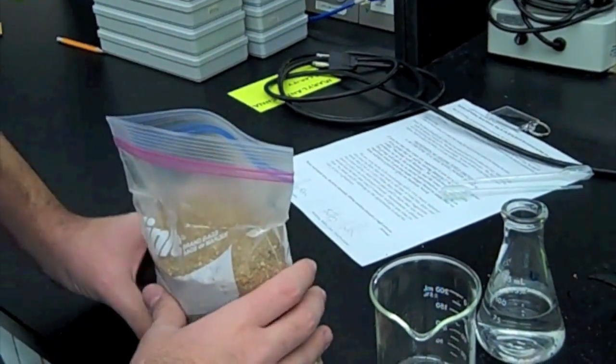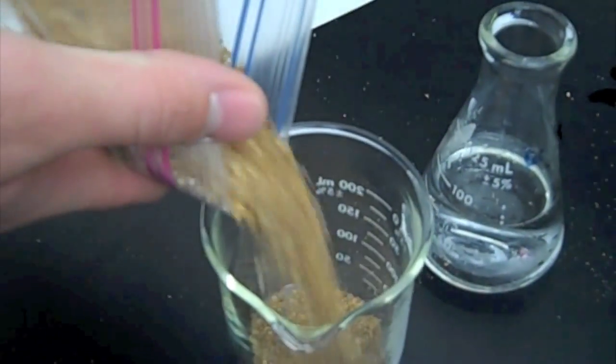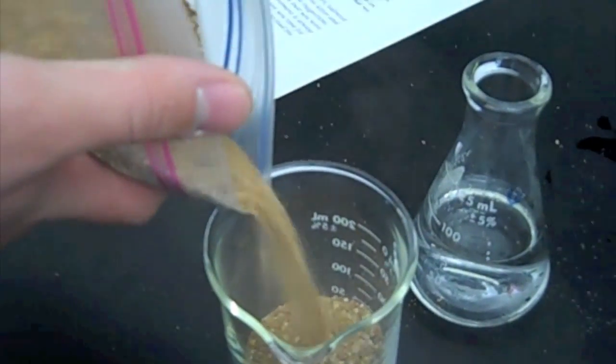So the way we're going to do that is we're going to take some sand and add it into our beaker. Of course any container will do fine. And you don't need that much, just a little bit, depending on how many seeds you actually plan on putting in there.